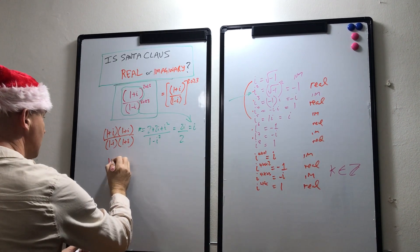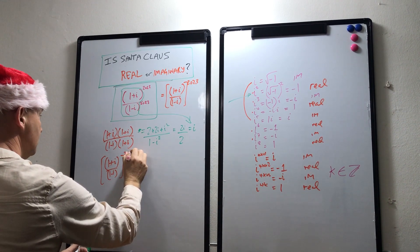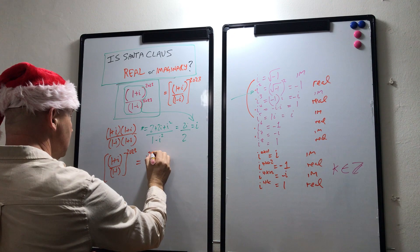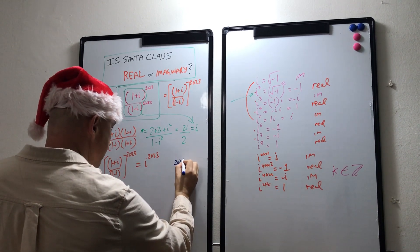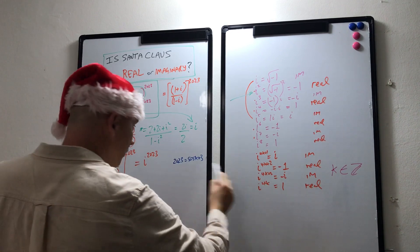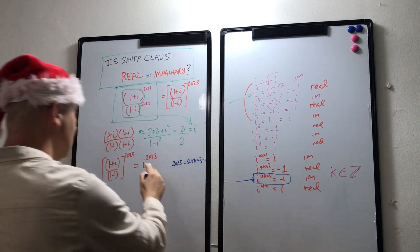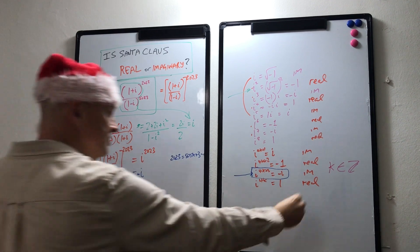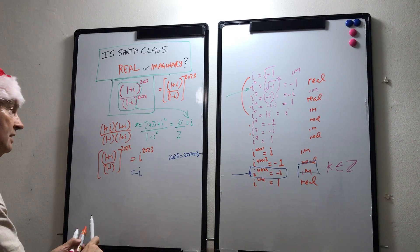So (1 + i)/(1 - i)^2023 — which holds the secret as to whether Santa Claus is real or imaginary this year — is the same thing as i^2023. Now 2023 can be written as 4(505) + 3, which is of the form 4k + 3, and so therefore i^2023 equals minus i, which is imaginary. Therefore Santa Claus is imaginary in 2023.